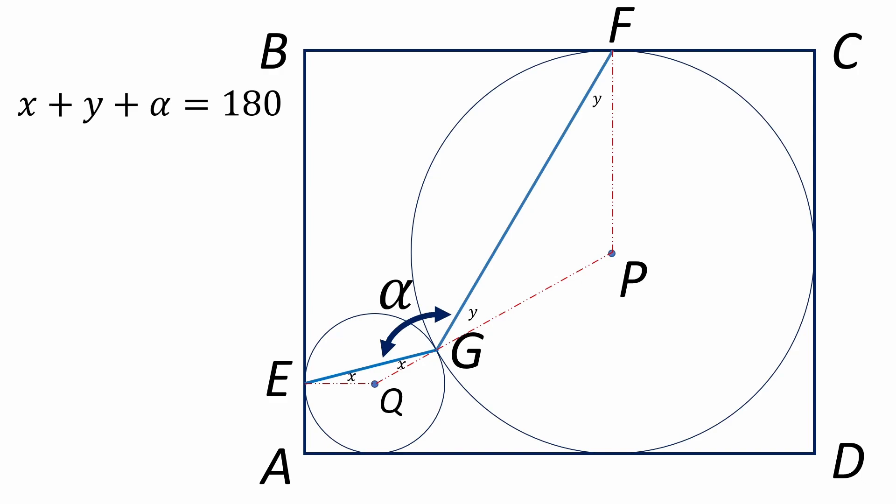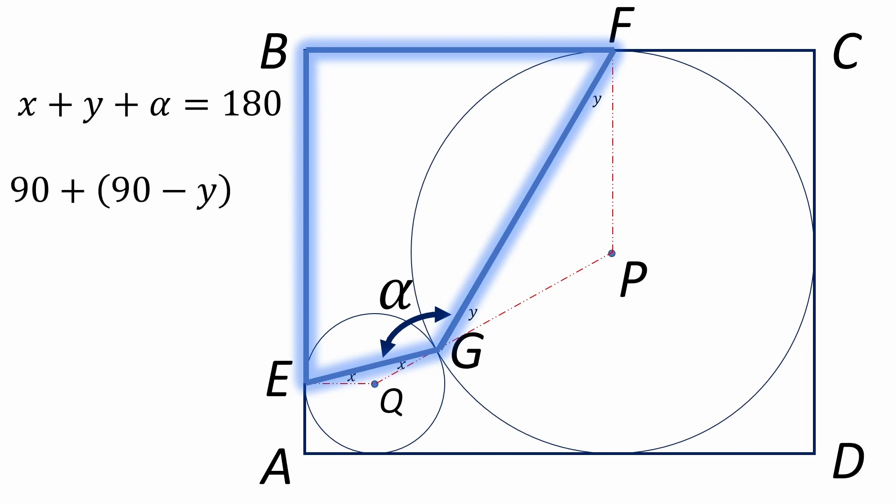Next focus on quadrilateral BEGF. If we start at point B and move clockwise, we can say that 90 plus 90 minus Y plus alpha plus 90 minus X all add up to 360.